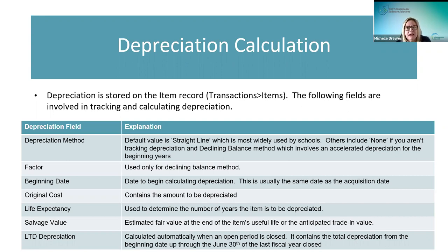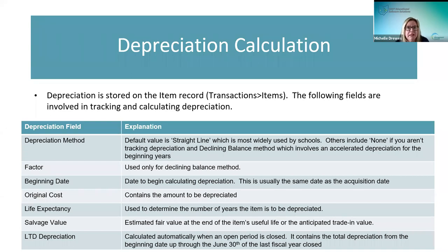The original cost is what the system depreciates on. Life expectancy is how many years you want to depreciate the asset — a number of years must be entered. Salvage value is the estimated fair value of the item at the end of its useful life. It's not required, but if entered, it's subtracted when calculating depreciation since the system knows that value is still remaining.